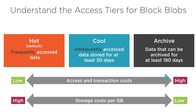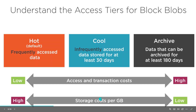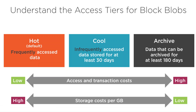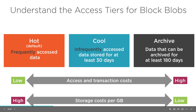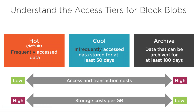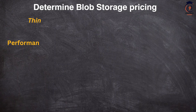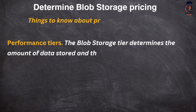For the hot tier, storage costs more the more data you store, but access is low cost. The more you store in hot, the higher the cost, but retrieval is fast and inexpensive. Now, coming back to the main part of this video — we will go through six important things that determine your cost. The first one is the performance tier.